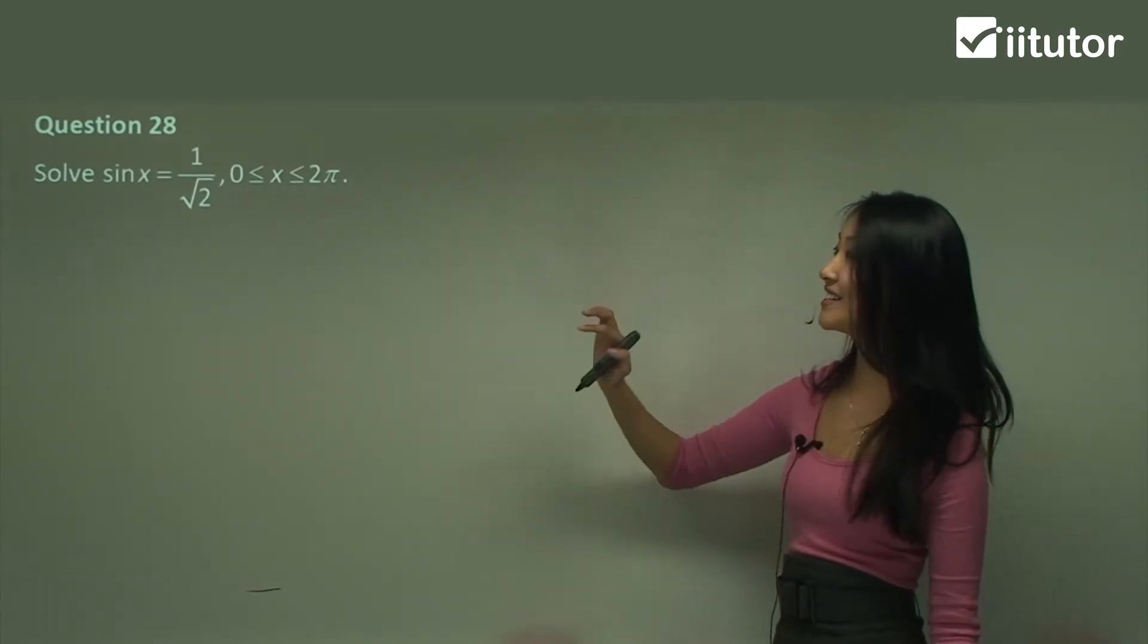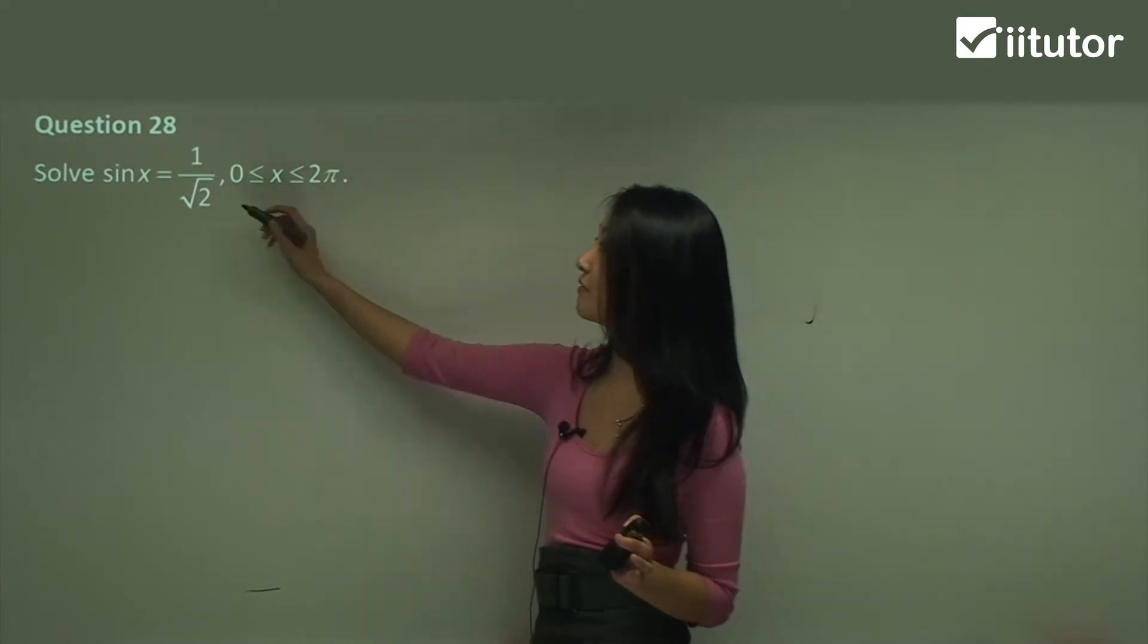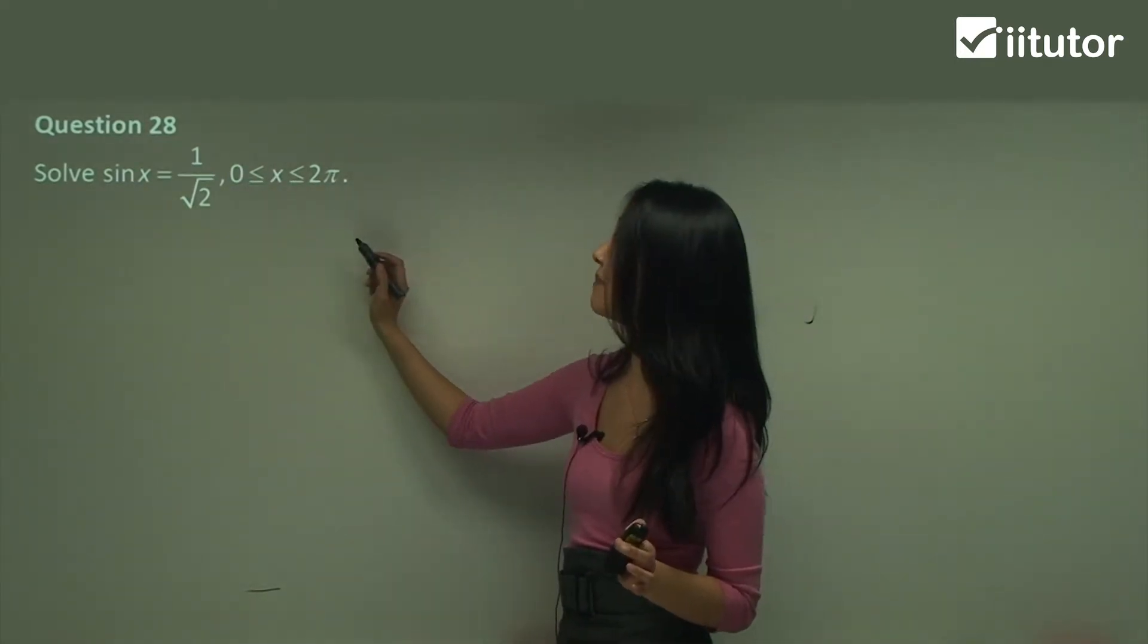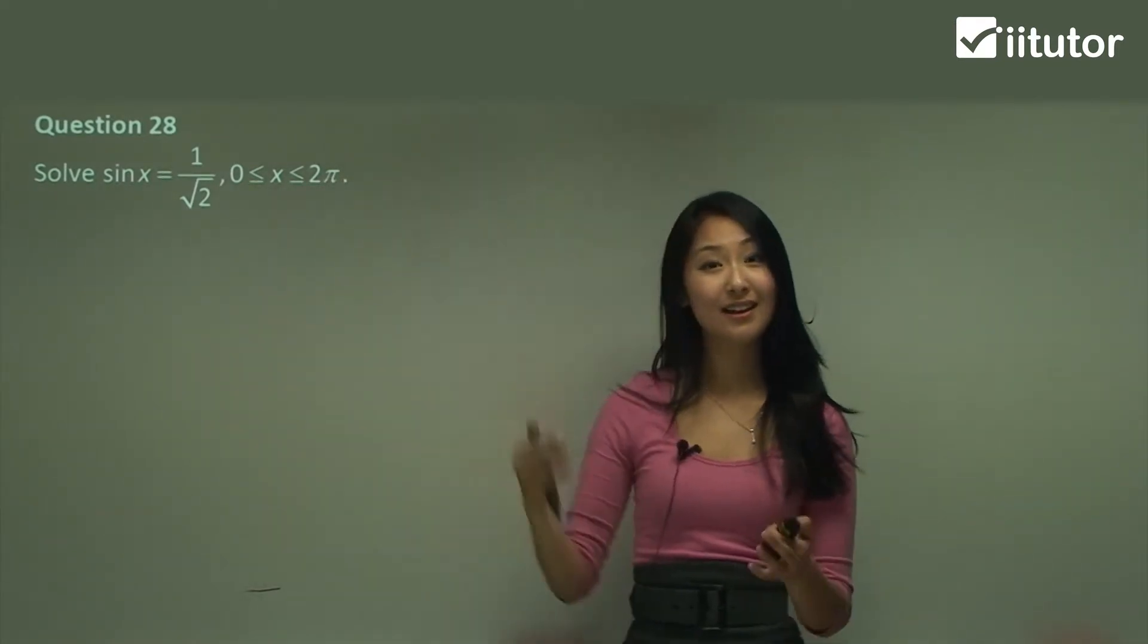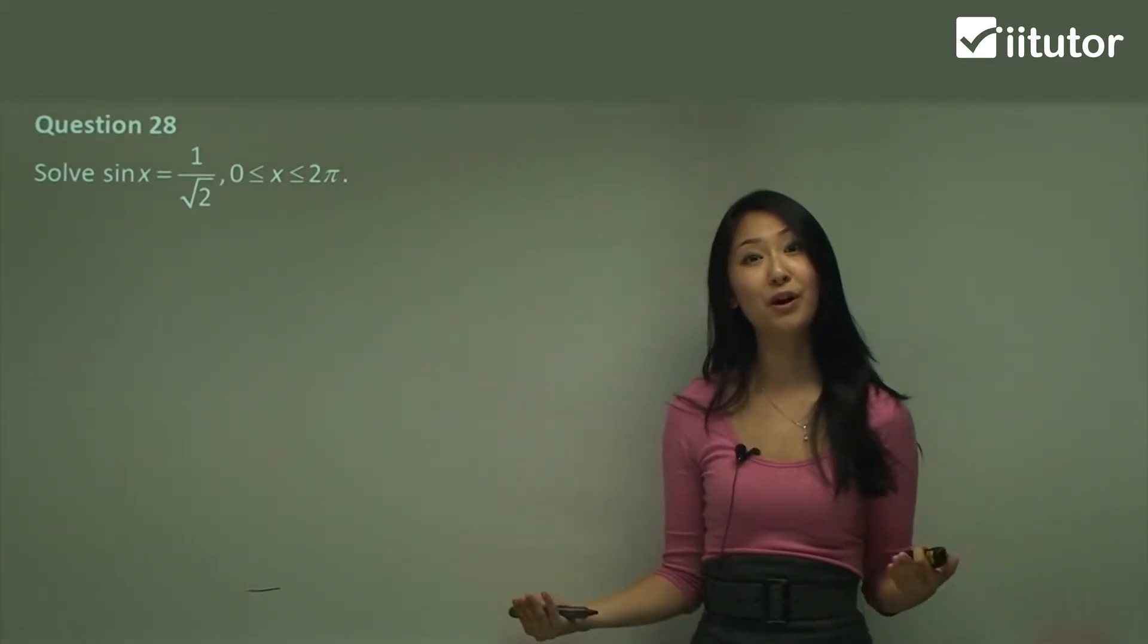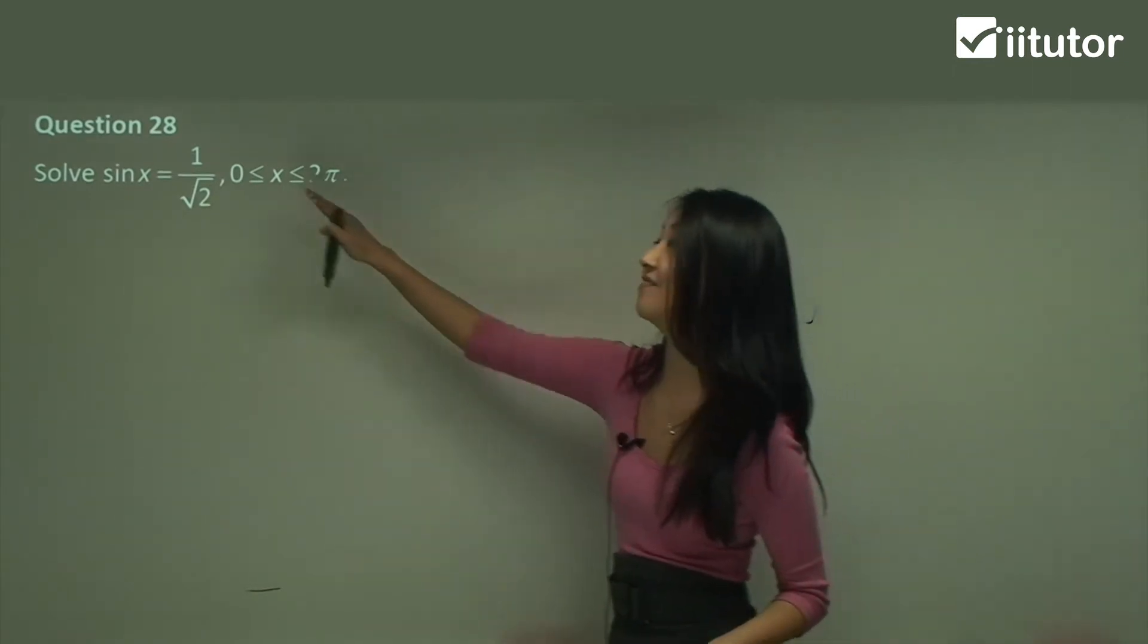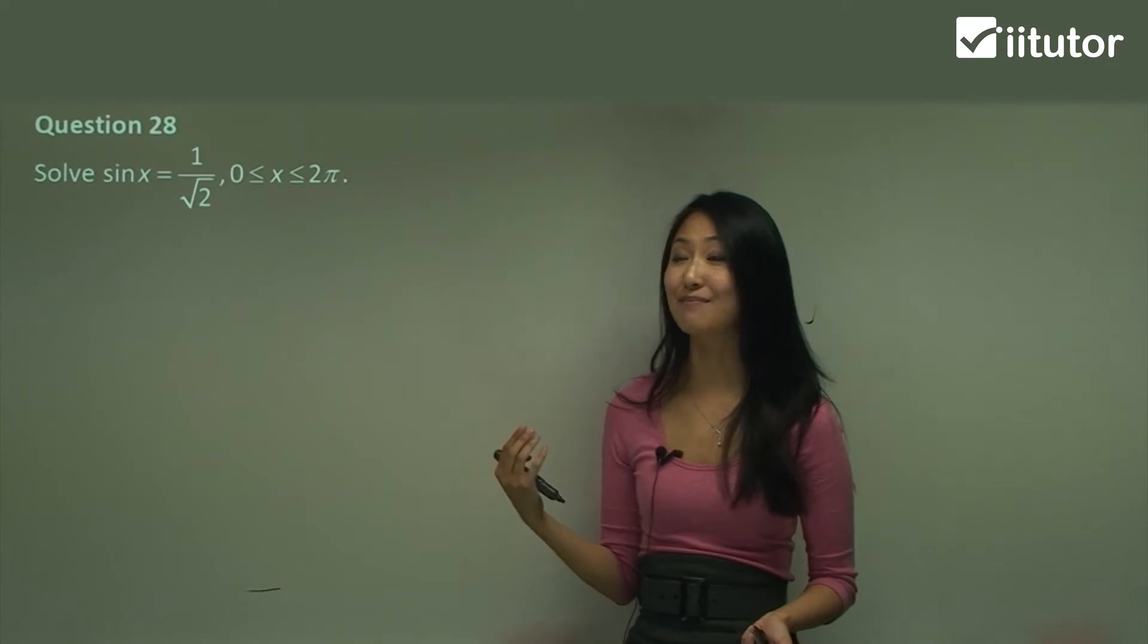Alright so in question 28 it's slightly different because we want to solve sine x equals 1 on square root 2 but we've been given a domain that x must be between 0 and 2 pi. So here we don't want to write it in the general form but what we want to do is we can use a general formula to work out the values that fall in between there. So let's see what I mean by that.